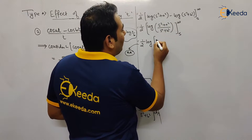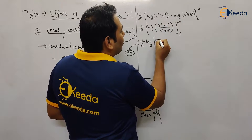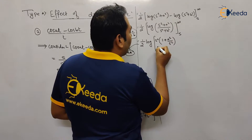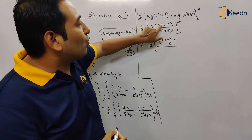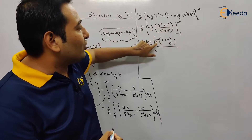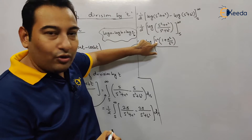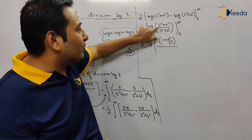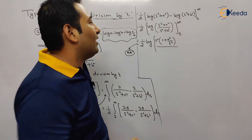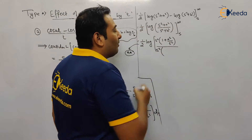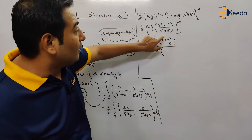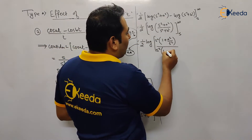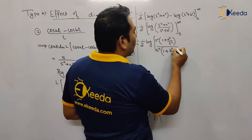Taking s² common from the numerator gives s²(1 + a²/s²), and from the denominator gives s²(1 + b²/s²). So inside the log we have (1 + a²/s²) / (1 + b²/s²), since the s² factors cancel.